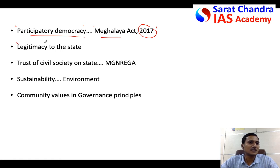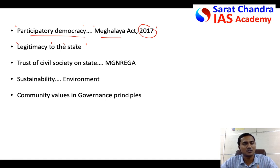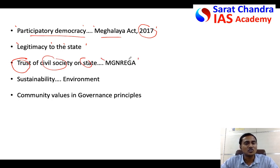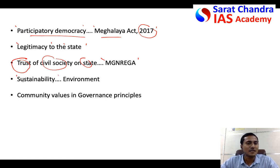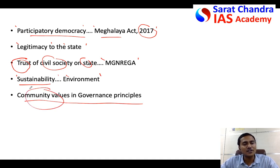Social auditing also increases the legitimacy of state and central government, because people start believing in the government when it allows them to see what is happening inside departments or schemes. The trust develops between the state and civil society. For example, in Andhra Pradesh, social audit of MGNREGA has improved people's trust in the scheme. When people are involved in auditing, sustainability is also taken care of because they focus on the environment and would not allow it to be degraded. Finally, through social auditing, community values get institutionalized in government governance principles.